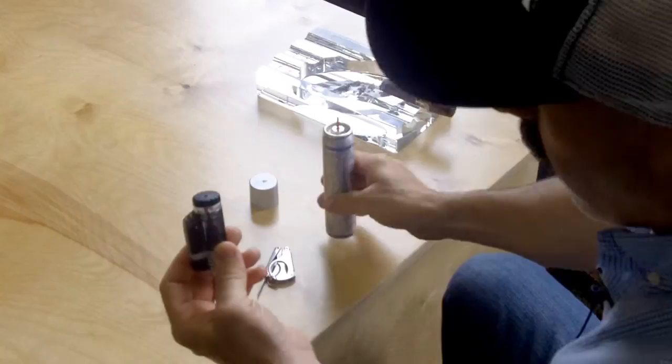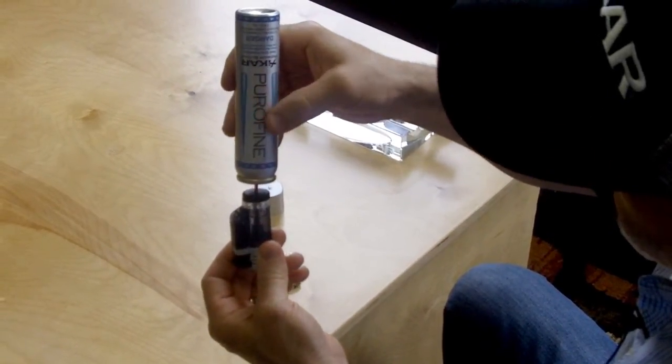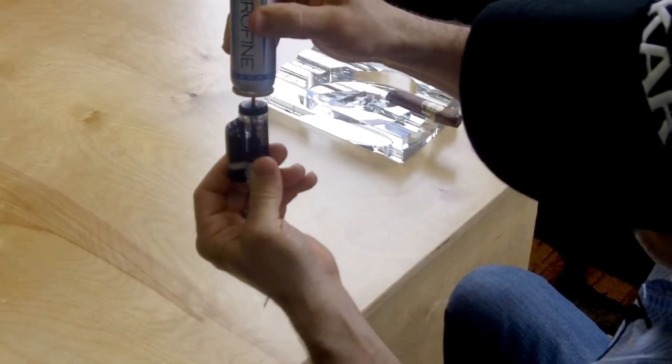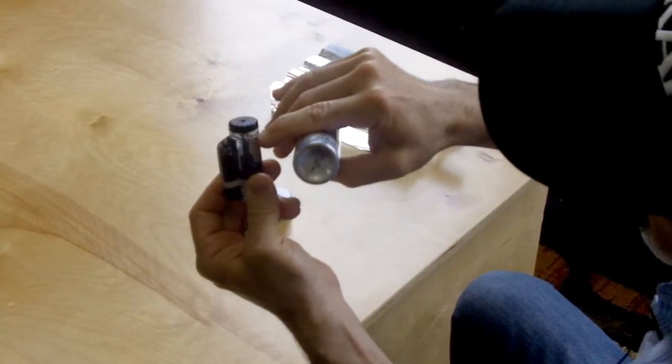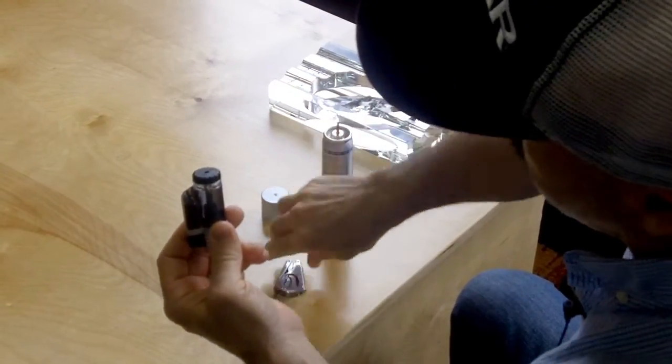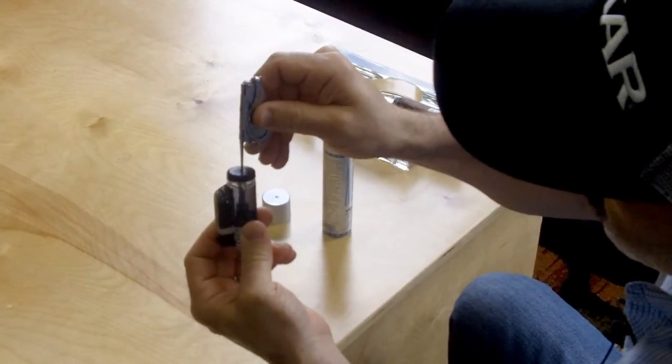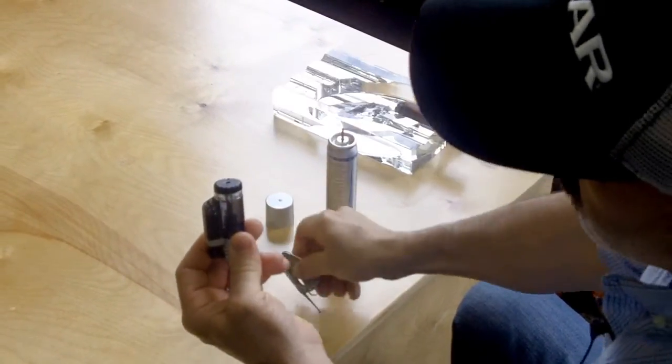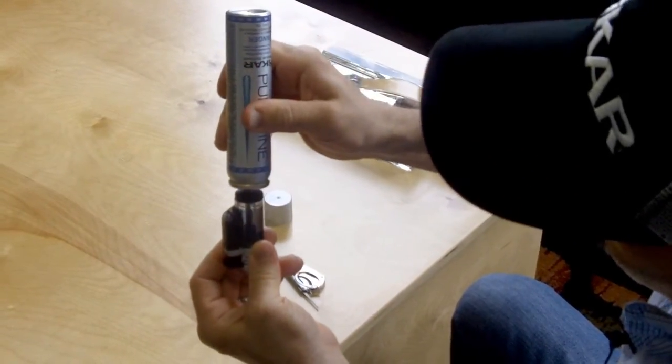Just burp it a little bit, bleed it a little bit, and then seat the can of butane on the fill valve again. You can see how it now filled it a little bit higher. You can do it one more time—just press on that fill valve, exhaust some of that trapped air in there, and one more time.